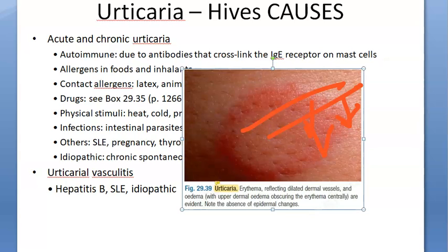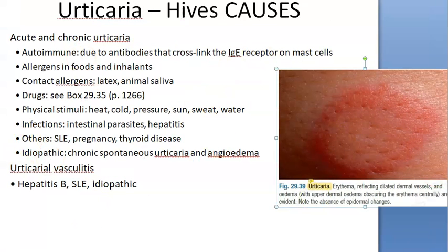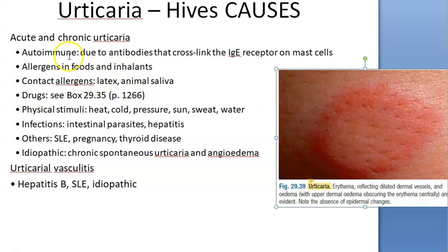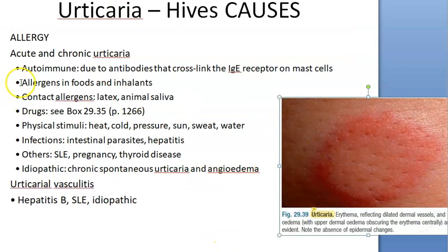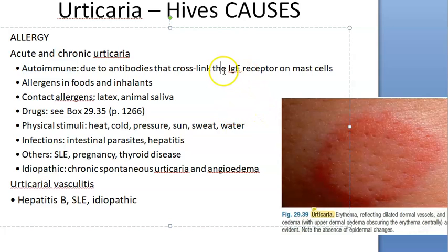This will involve the subcutaneous tissue or submucosal layers if it is in the mucosa. Basically, this is more like an allergic reaction — you have mast cells and IgE involved. So the main cause here is allergy. It happens because of autoimmune conditions and IgE reactions.